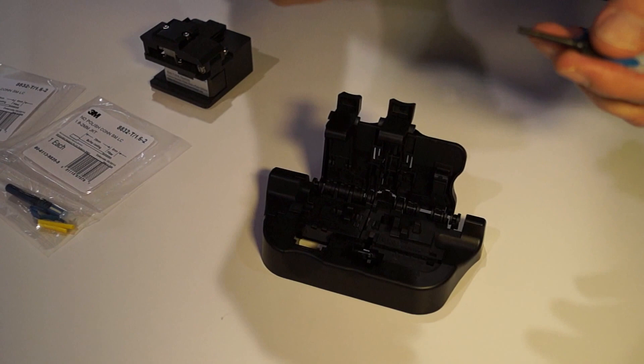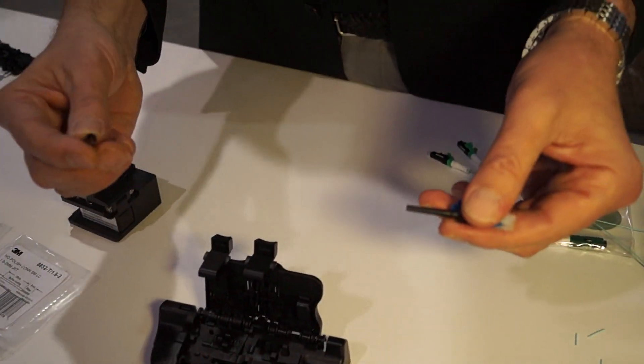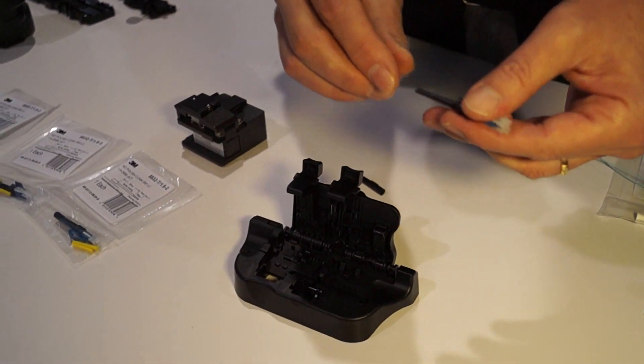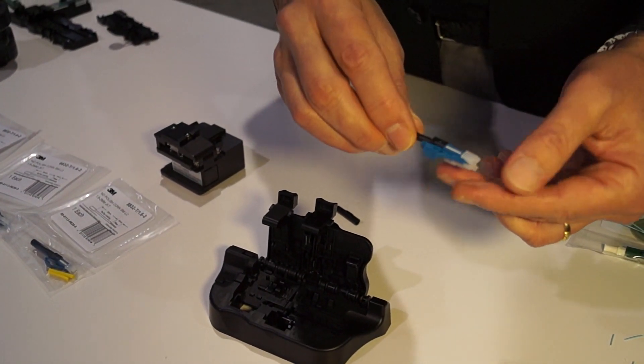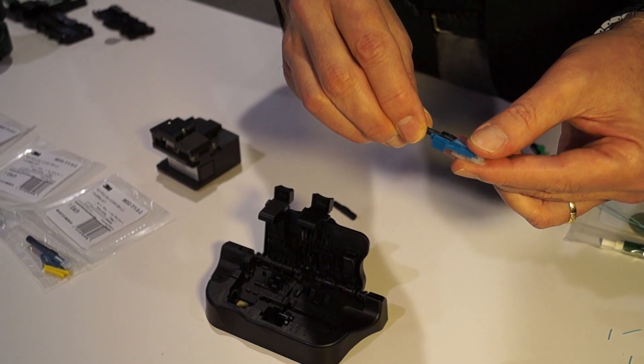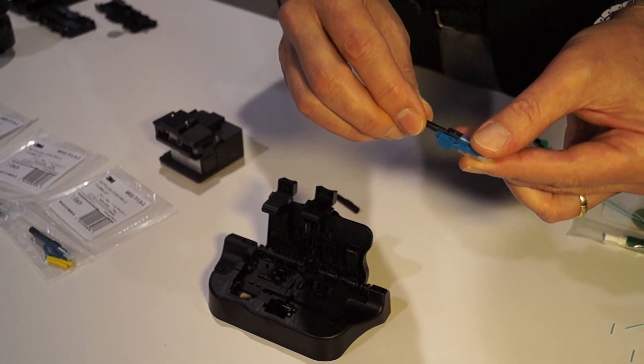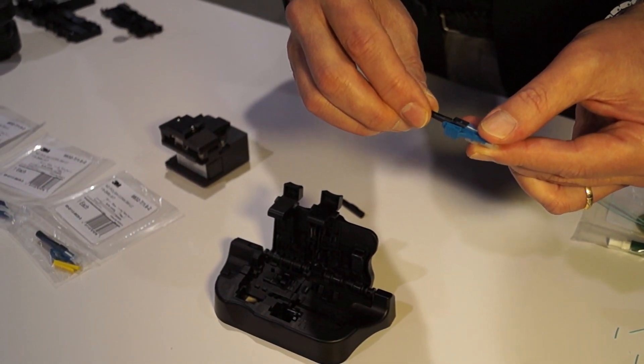At this point, you would take the barrel off of the connector and slide it onto the jacket of the fiber, pushing the fiber in until the fiber bows slightly. That means that the pre-polished stub inside the connector is mating with the fiber that you are now trying to splice it to.